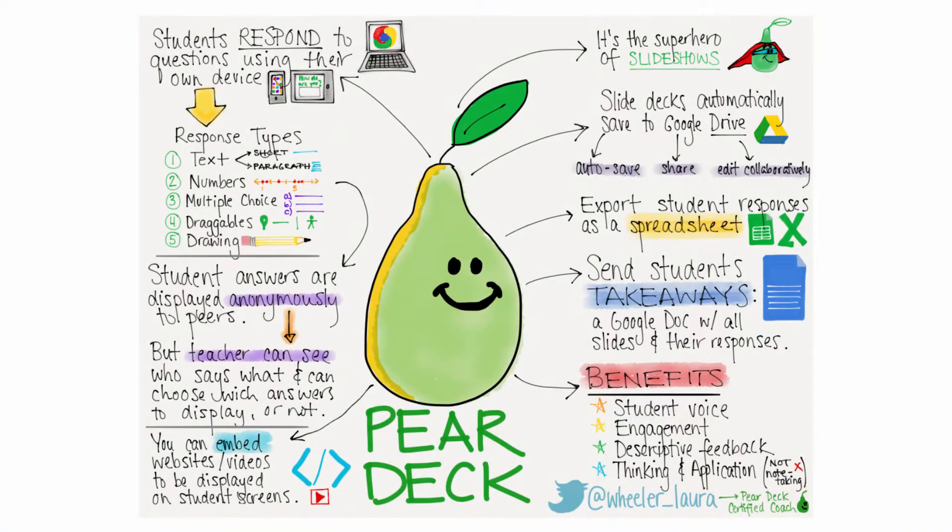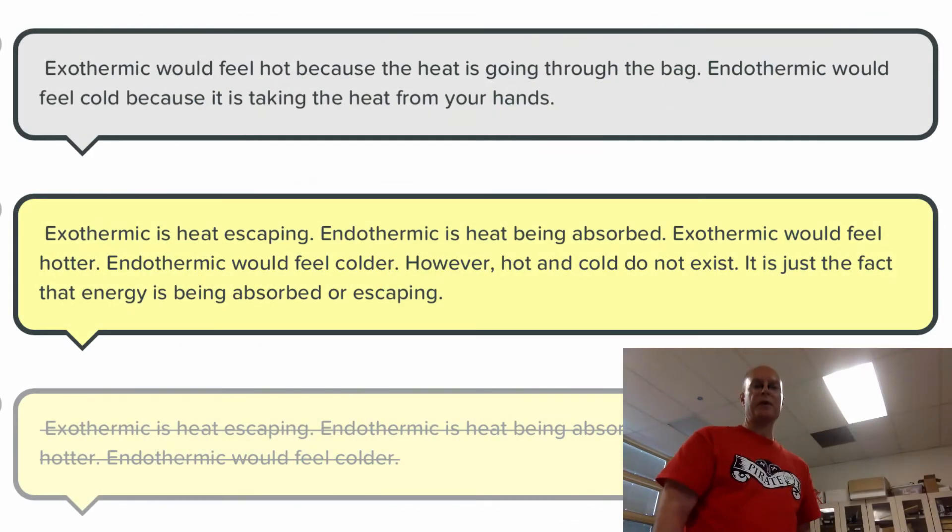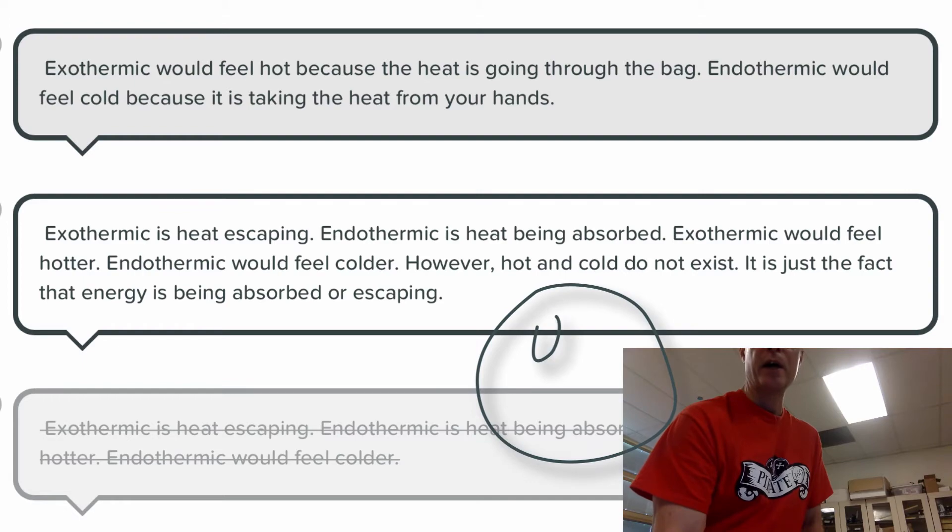Pear Deck includes several types of formative assessment tools. One is the basic essay, spill the beans type question, the importance of which cannot be overstated. This one says exothermic's heat escaping, endothermic's heat being absorbed. Exothermic would feel hotter. Endothermic would feel colder. However, hot and cold do not exist. It's just the fact that energy is being absorbed or escaping. Wow, that's awesome.